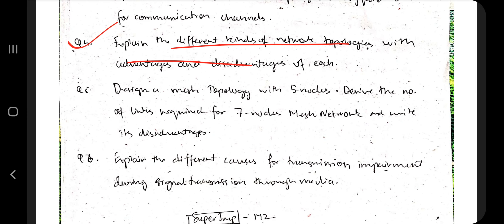Next, explain the different kinds of network topologies with advantages and disadvantages. Cover: what is a network topology, why there is a need for different topologies, the purpose of each, which context each is used in, the different applications, the cost to set them up, the time factor affecting different contexts, each topology's advantages and disadvantages, and the bandwidth supported by each.